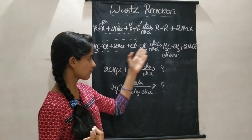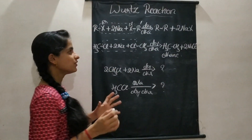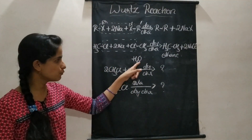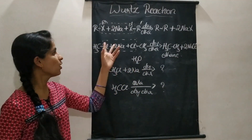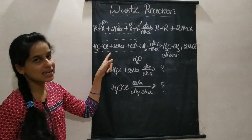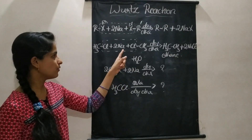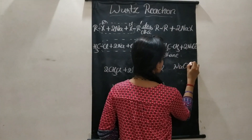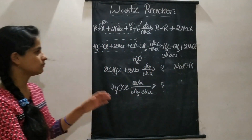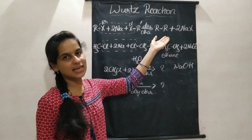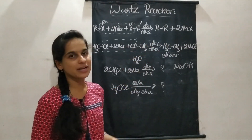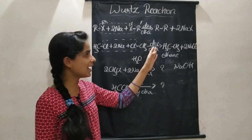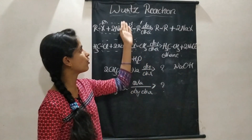Let us consider the role of dry ether. If we use water as the medium, water is reactive with both reactants - it reacts with alkyl chloride, and sodium metal reacts with water vigorously to give NaOH. So we cannot get ethane or any alkane as a product if water is used. Therefore, dry ether is used as an inert solvent and is the perfect medium for Wurtz reaction.